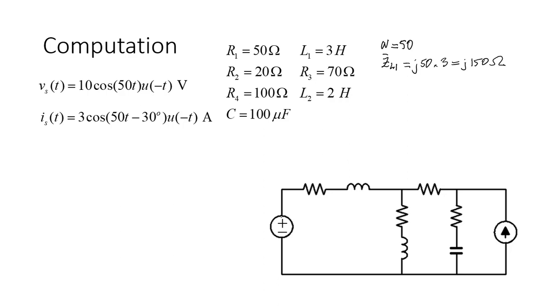That is the impedance of the first inductor. Impedance of the second inductor: jωL, j50 multiplied by 2, j100 ohms. So those are the impedances of the two inductors.